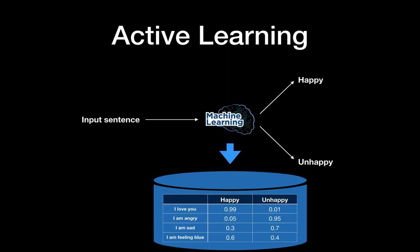Say you collected all the real user data queries, and you have this kind of database. 'I love you' has confidence of 99% happy. 'I'm angry,' you have 95%, which is good. But 'I am sad,' you have like 70% for unhappy — we want to improve to have more confidence. And 'I am feeling blue' is even worse because it has 60% confidence on happy — we want to improve this one as well to go to unhappy with high confidence. You could just label all this data and put it into the next training, but in a real scenario you may have millions of data, so you will spend a lot of money on human labeling.